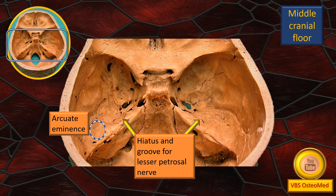This sloping wall has some hiatus and grooves. I have collectively called them the hiatus and groove for the petrosal nerves. On the opposite side, a circled area showing a slight elevation corresponds to the anterior wall of the petrous temporal bone — it corresponds to the superior semicircular canal. This elevation is right above the superior semicircular canal.